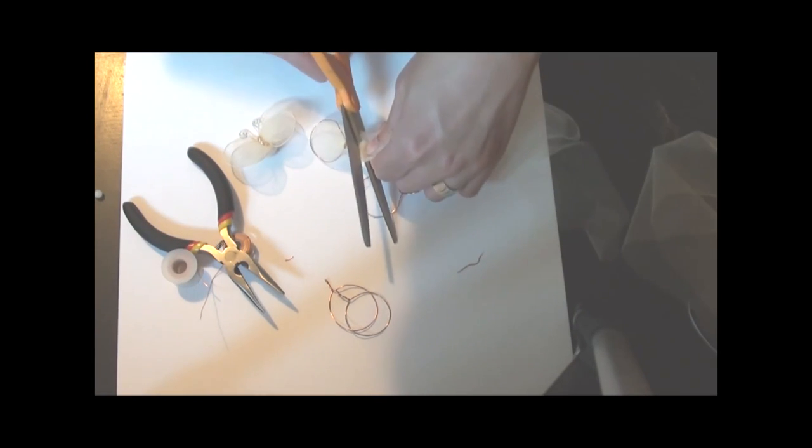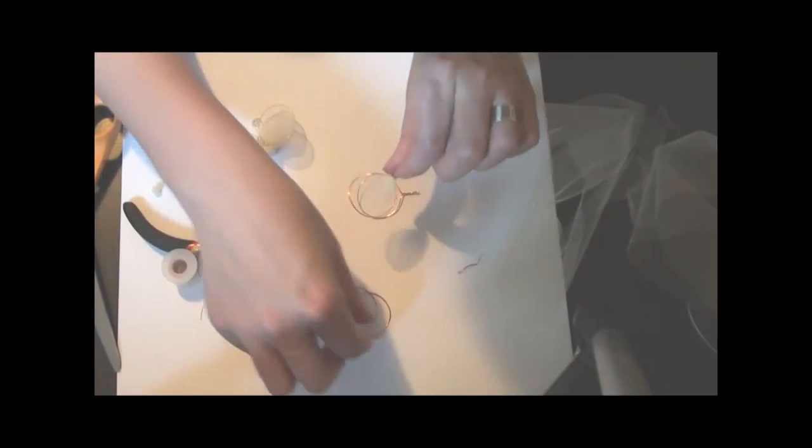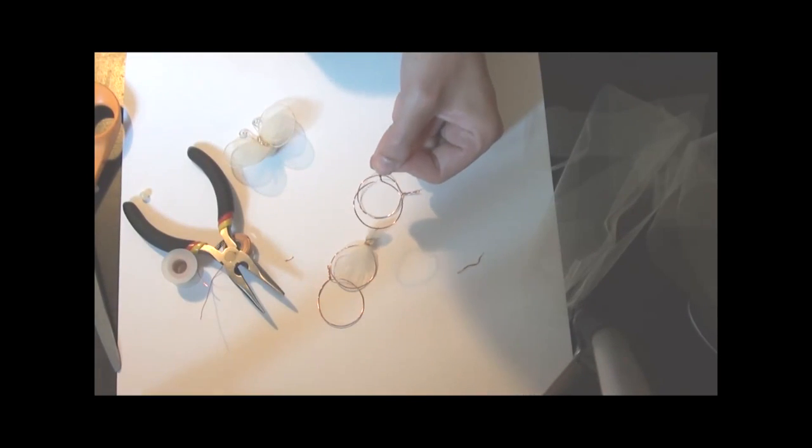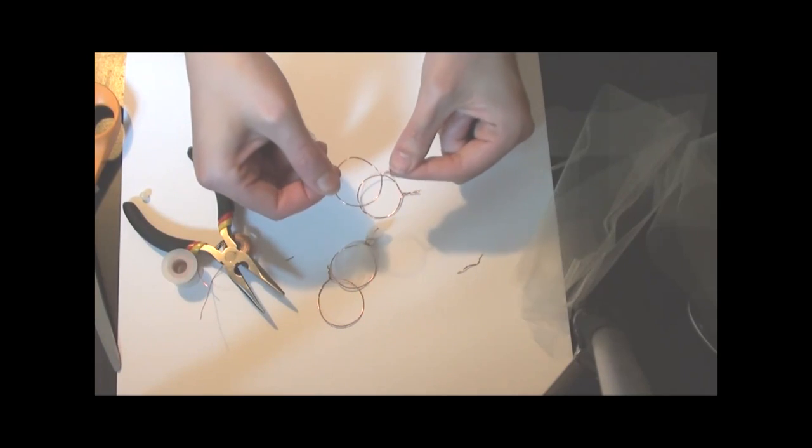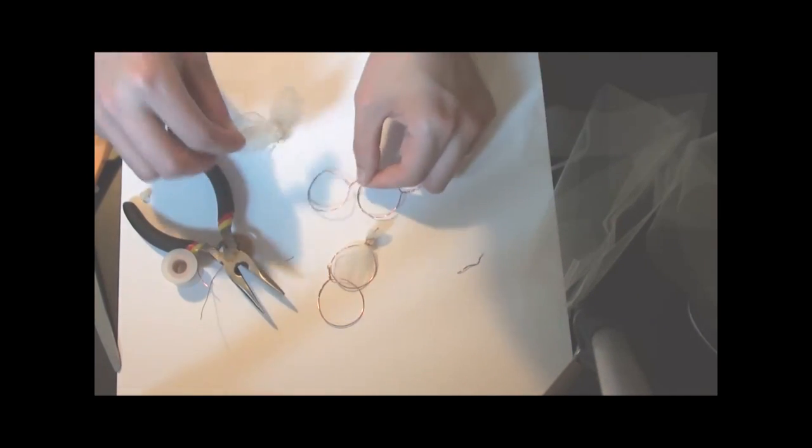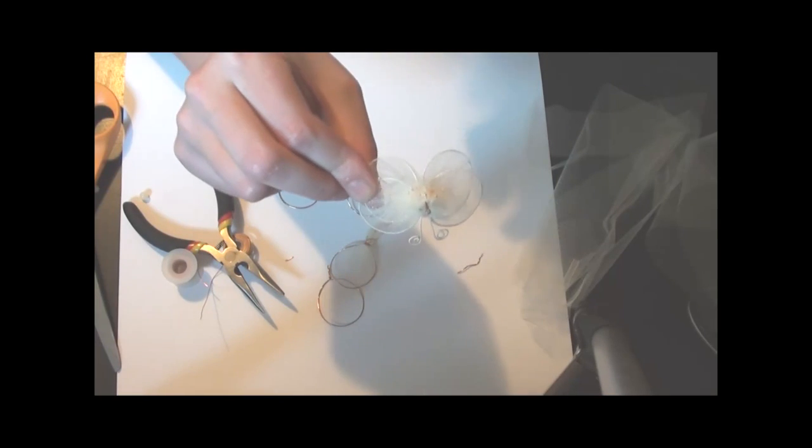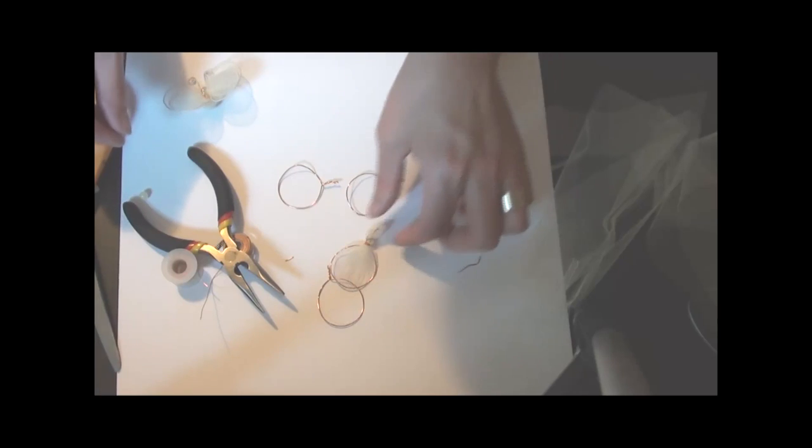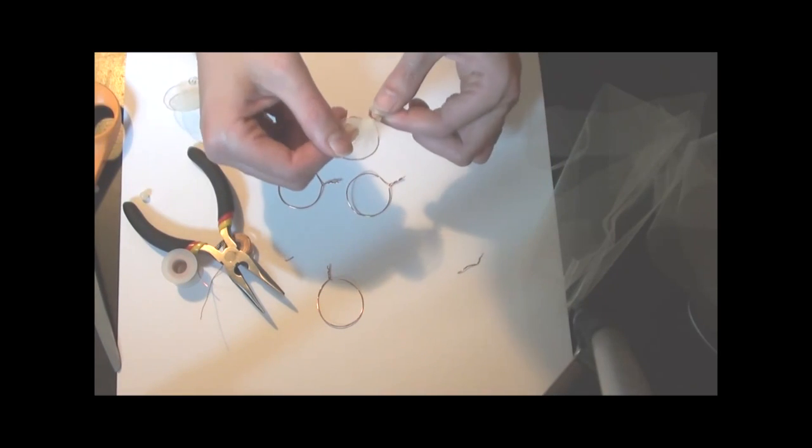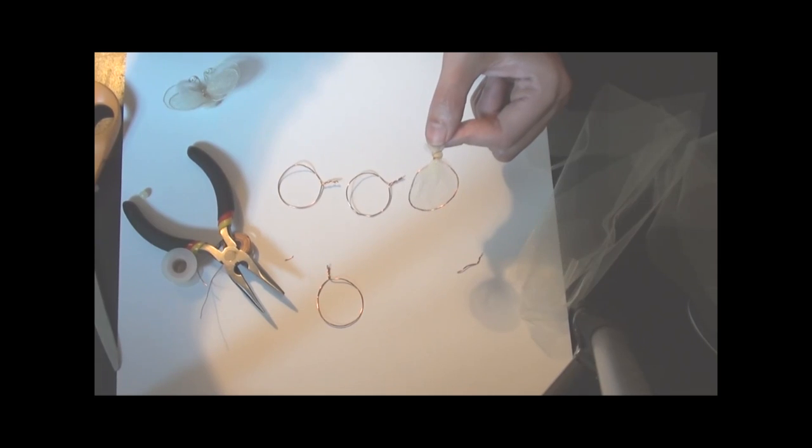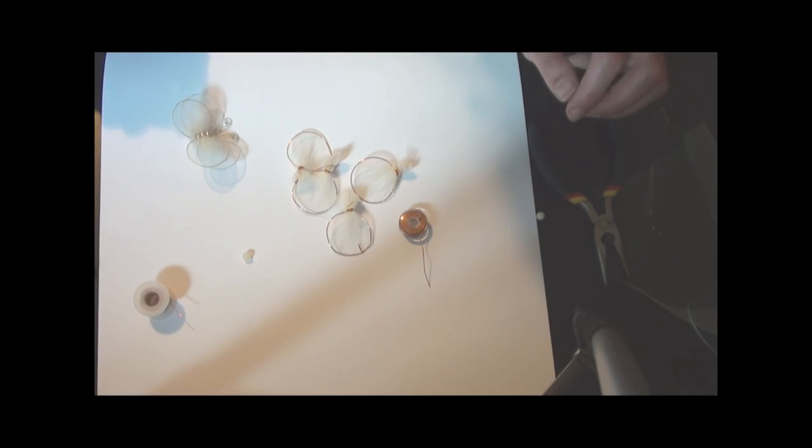It's also important, I forgot to mention earlier, when you do your circles, when you form your circles and then you wrap the end, you want to keep it kind of short or the back of your butterfly where you have everything tied together. That will get kind of puffy on your page or your card. So again, now you'll do this the same way with all four of them.